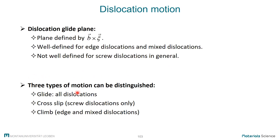There are three different types of dislocation motion that can be distinguished. The most important is glide, and that affects all dislocations — all dislocations can respond to applied shear stress and glide. There is then also cross-slip and climb. Cross-slip is a type of motion that only screw dislocations can make, and climb is a motion that only edge and mixed dislocations can make. I have specific slides for all three mechanisms with more details.